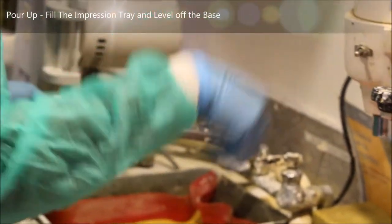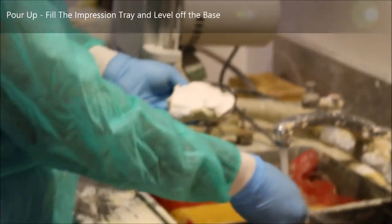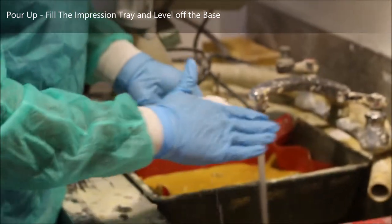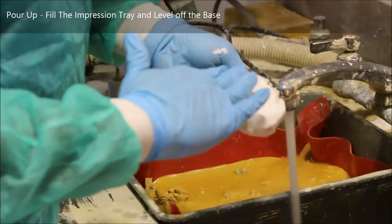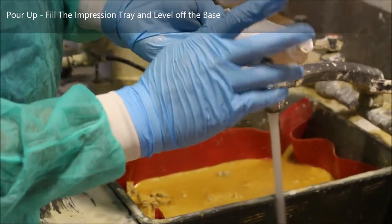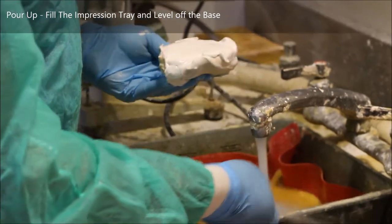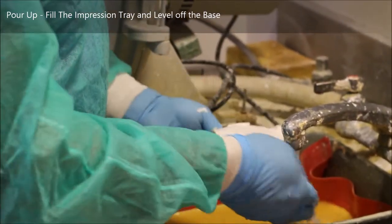Once you're done with this, you take a little bit of water to smooth out the top. This is entirely optional and this increases the setting time of the stone, but it's something that I generally do in order to make the trimming of the cast later a little easier. Plaster takes about 10 minutes to set.